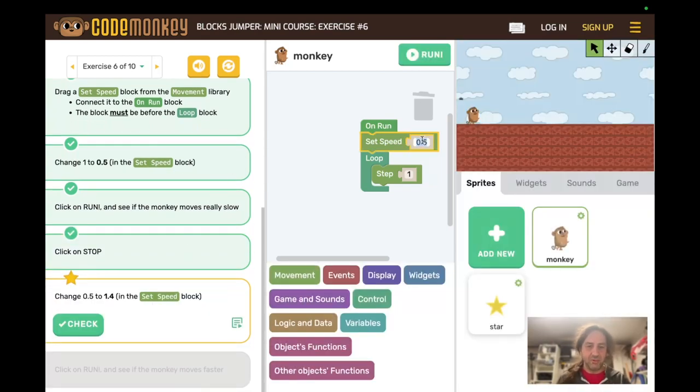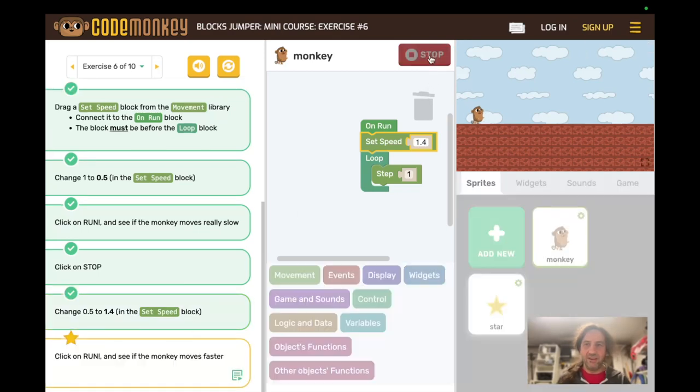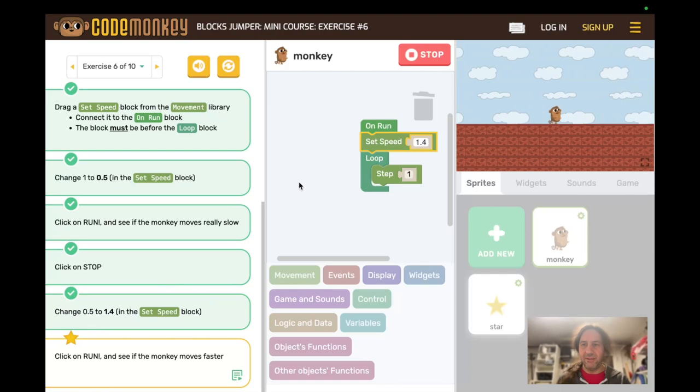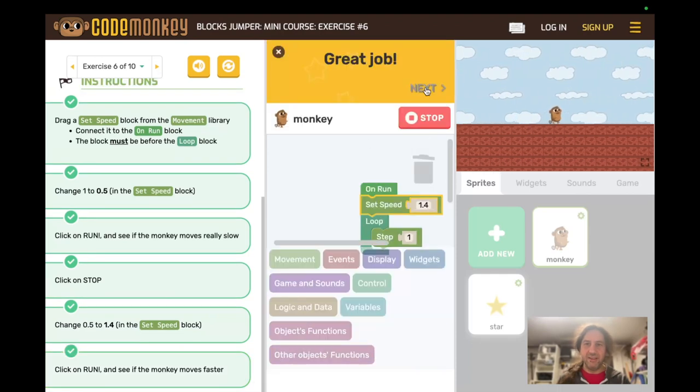Okay, now we change 0.5 to 1.4. Check. And run. Run, monkey, run. Great job. Next.